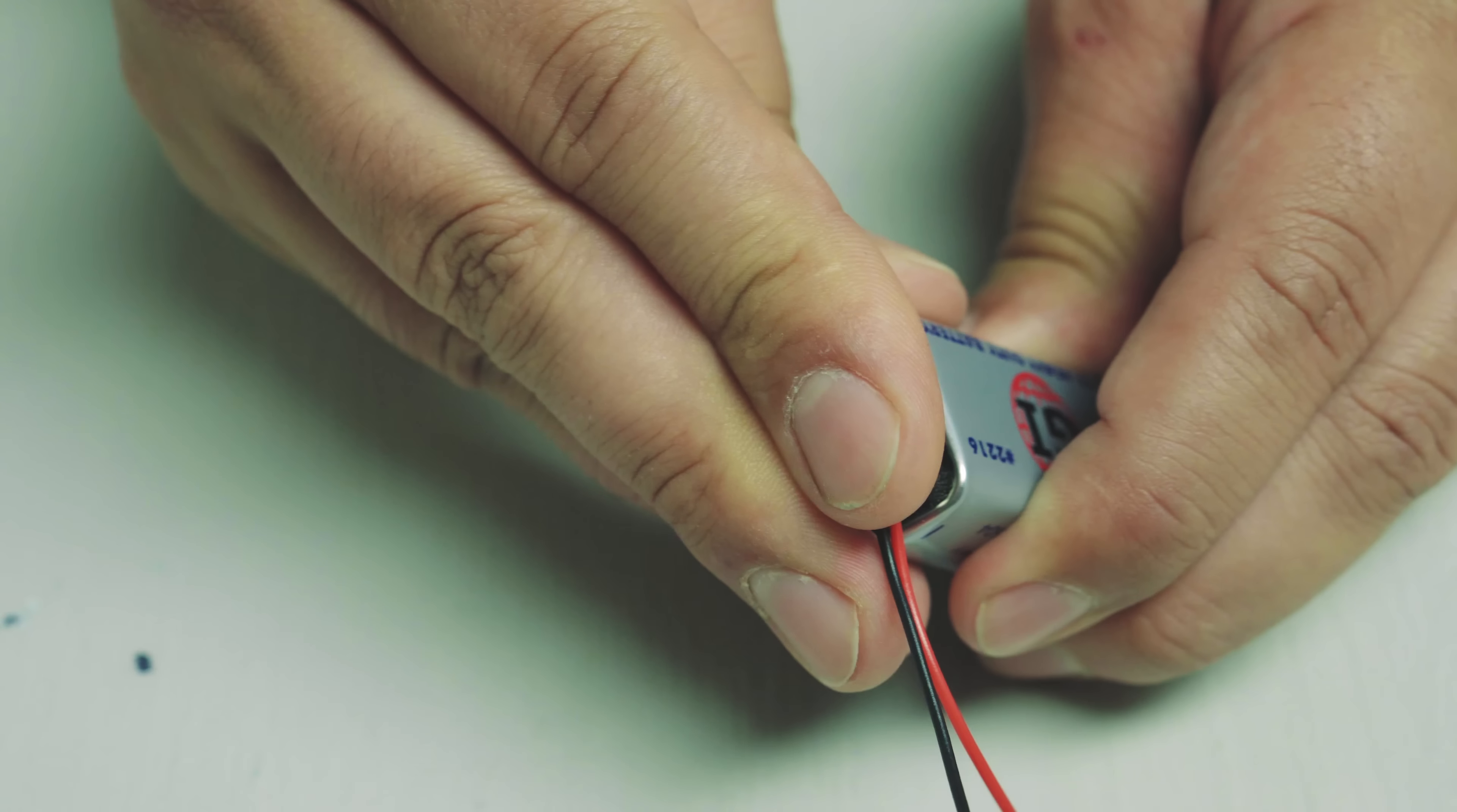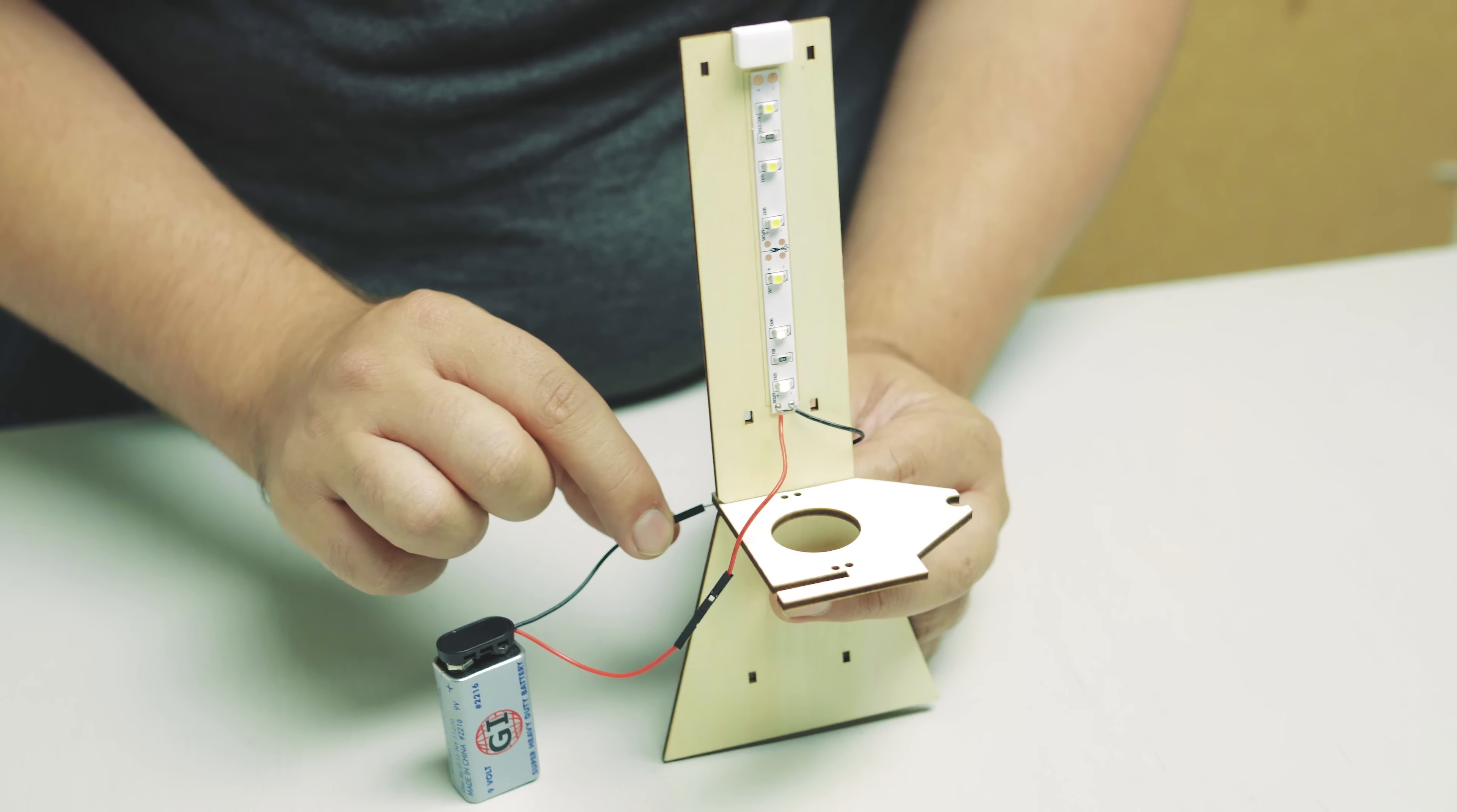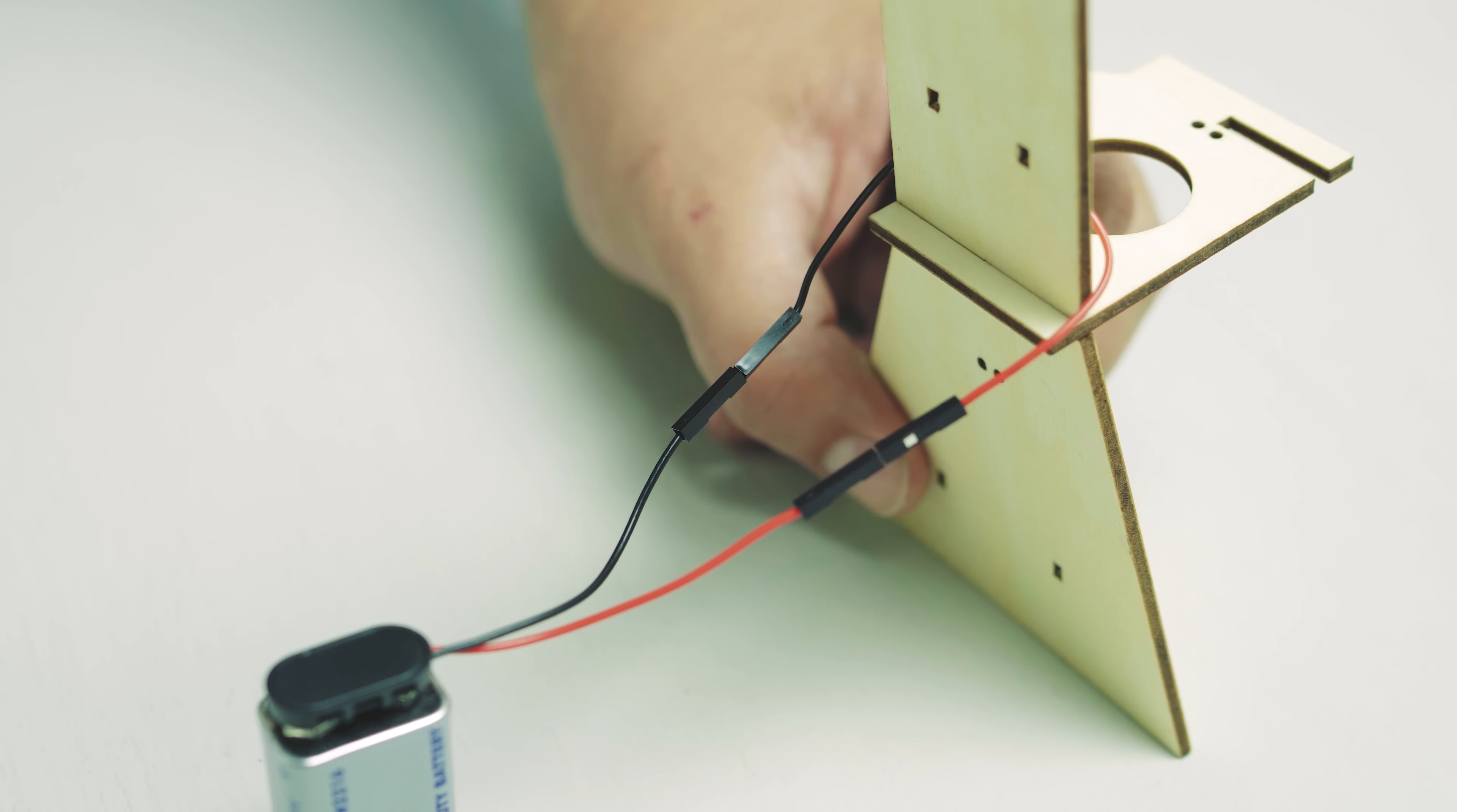Attach the snap connector to your 9 volt battery. Bring the LED light strip wires around to the back side of the frame. Connect the black wire from the light strip to the black wire from the battery. Do the same thing for the red wires and the LEDs should light up. If your LEDs don't light up, check and make sure that the two red wires are connected together and the two black wires are connected together, and make sure that the battery is securely attached to the snap connector.